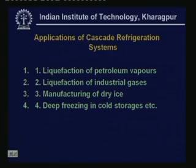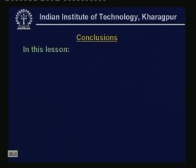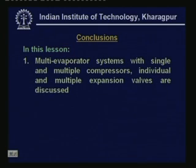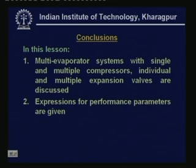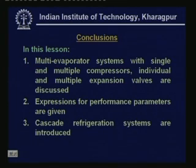In this lesson, we discussed multi-evaporator systems with single and multiple compressors, individual and multiple expansion valves, and derived expressions for typical performance parameters. We also discussed cascade refrigeration systems — their working principle, typical problems, and how to find the optimum cascade condenser temperature. With this, we conclude the lectures on vapor compression refrigeration systems. From the next class onwards, we will discuss vapor absorption refrigeration systems.